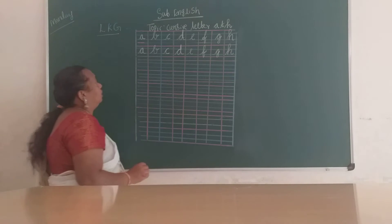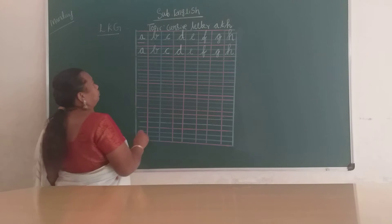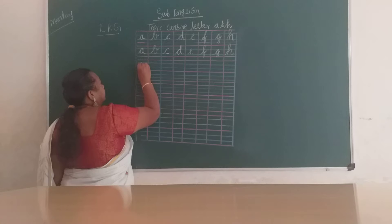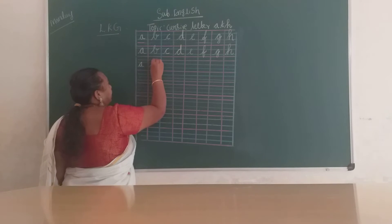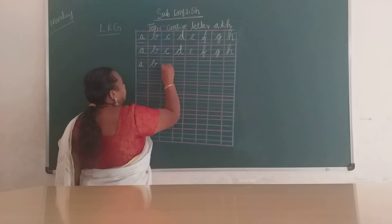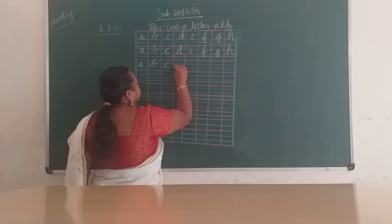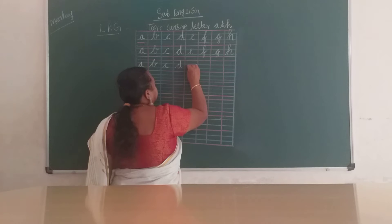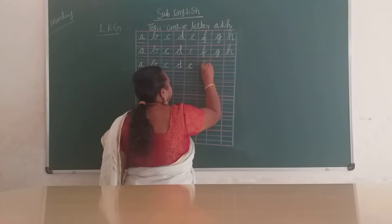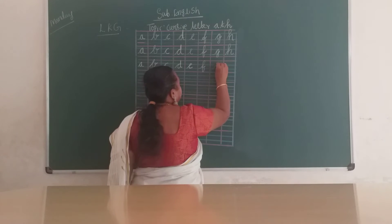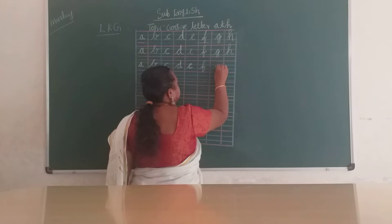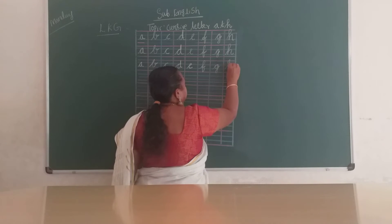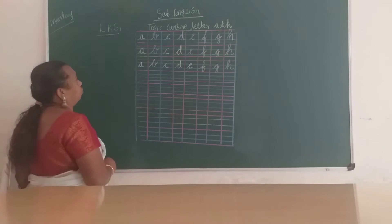What is this, children — cursive letter A to H? I have to practice, children. Circle, slanting line, circle — A. You start from blue line, touch red line — B. Slanting line, circle — C. Slanting line, circle — D. Slanting line — E. Slanting line, touch red line, down blue line — F. Slanting line, circle — G. Blue line to red line — H. What is this? Cursive letter A to H.